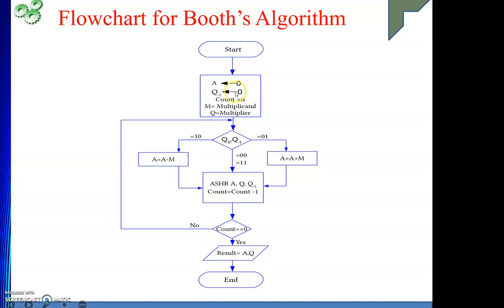To do the multiplication we require two inputs: multiplicand and multiplier, for which we will use two registers. M will hold the multiplicand and Q will hold the multiplier. Both the multiplicand and multiplier are represented using two's complement form and represented using an equal number of bits. Count will hold the number of bits in your operand. To the right of the multiplier register Q, one zero is assumed.